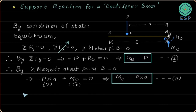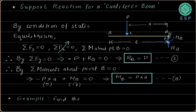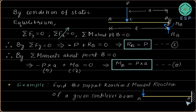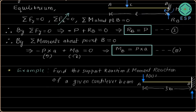Let's look at a simple example using the same conditions. Find the support reaction and moment reaction of a given cantilever beam. There is a point load acting at the free end, point A. The length of the beam is 3 meters and the point load is 100 newtons. The cantilever beam will have a force support reaction RB and a moment reaction MB at the fixed end, point B.